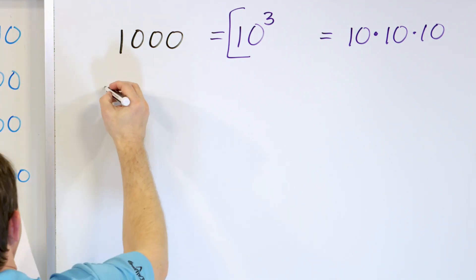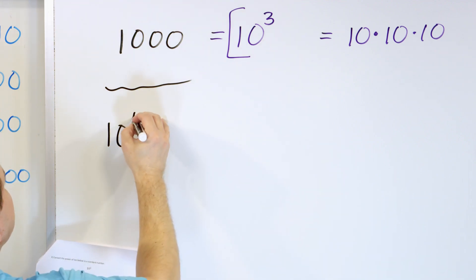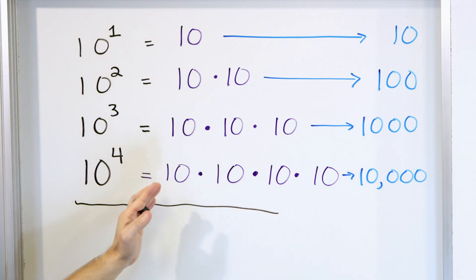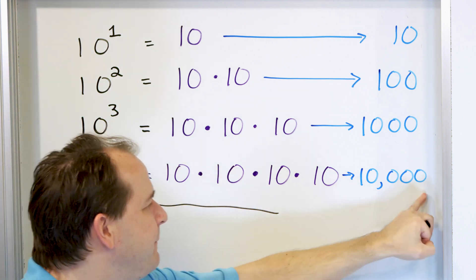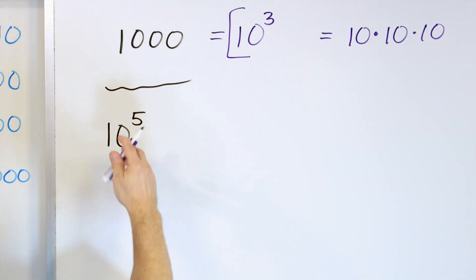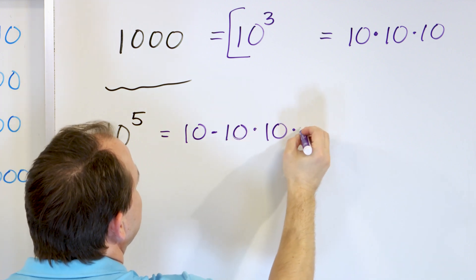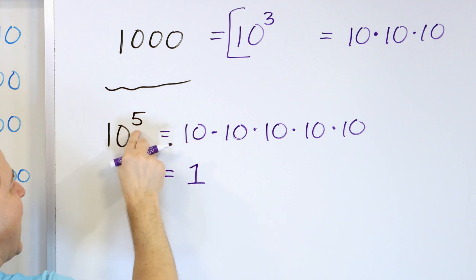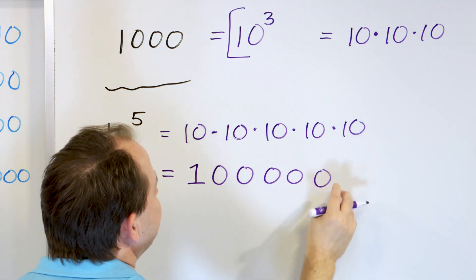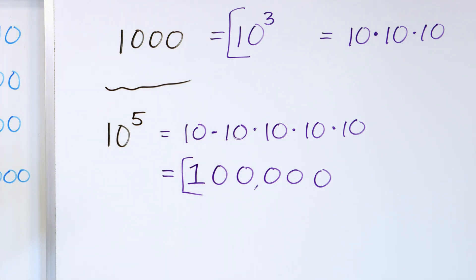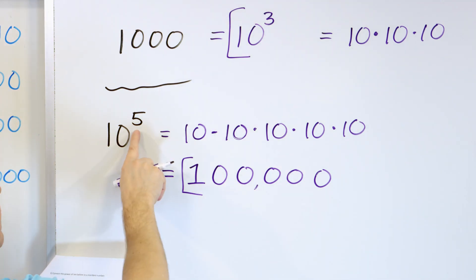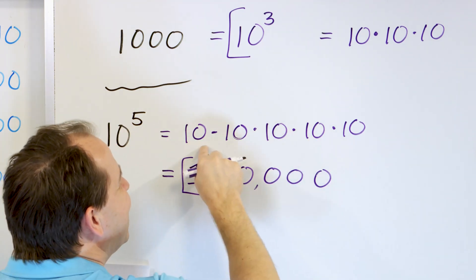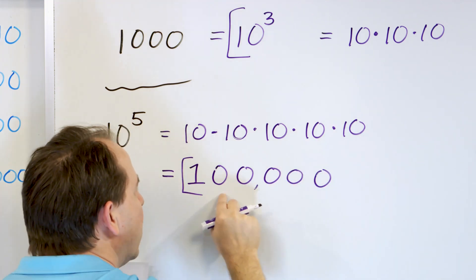Problem two: convert 10 to the power of 5 into a standard number. What this really means is 10 times 10 times 10 times 10 times 10 — five of them. If you're writing it as a full number, it's a 1 with five zeros after it: 100,000. So 10 to the power of 5 is 100,000. That's because 10×10=100, ×10=1,000, ×10=10,000, and ×10 again gives 100,000.